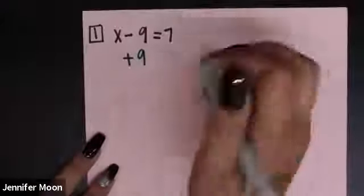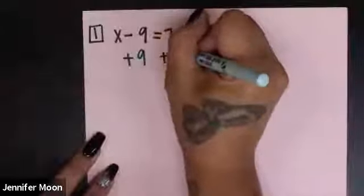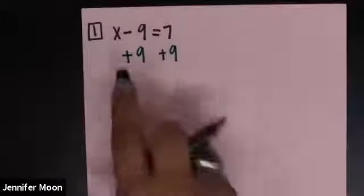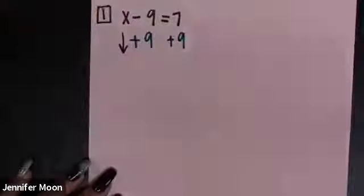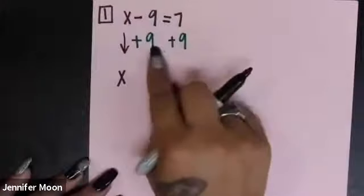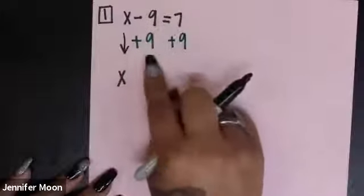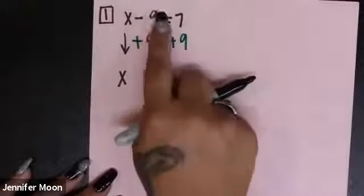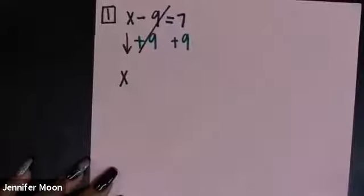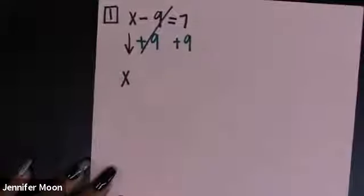What you do to one side you have to do to the other. So if I'm going to add 9 right here that means I also add 9 on the right hand side. And so I'm going to write my problem. I start with my x. I haven't done anything to it so I just write it, I just bring it down. And then if you notice negative 9 and positive 9, that's that additive inverse that we learned which is if you have the same number in different signs it goes to zero.